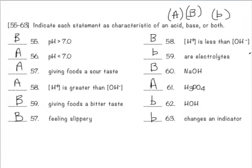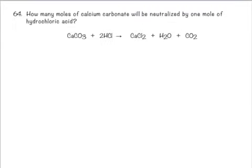And then finally, changes color of an indicator. Both of them do. Base will change red litmus paper blue, and acid will change blue litmus paper red.